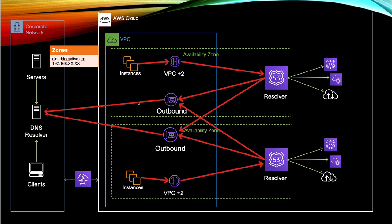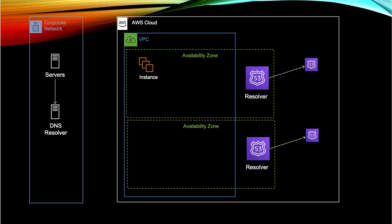That's everything I wanted to cover in the theory part. Next we'll go to the demo. For the demo, we'll simulate your corporate environment in AWS by creating two different VPCs — one for your corporate on-prem network and one for your AWS VPC. We'll try to resolve DNS names between them, see that it won't work, then add inbound and outbound endpoints to resolve it. I'll cover that in Part 2. Please subscribe to our channel and press the bell icon so you'll be notified when I upload Part 2. Thank you so much for watching!